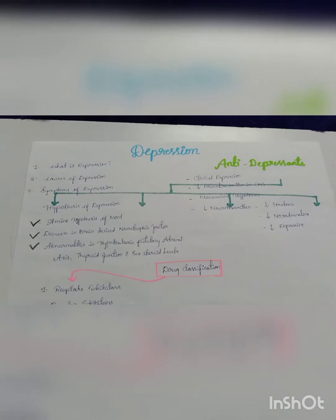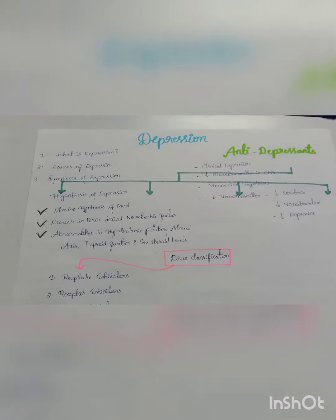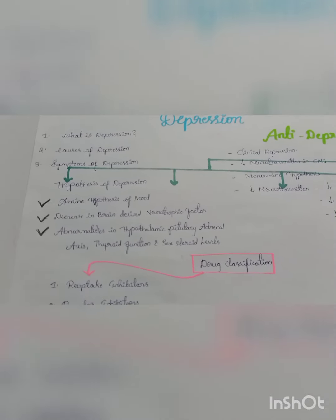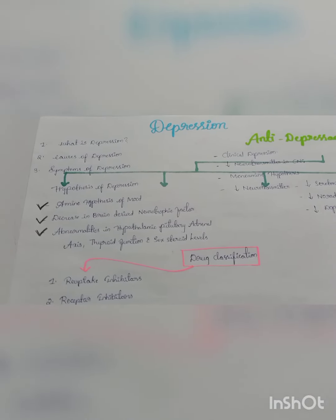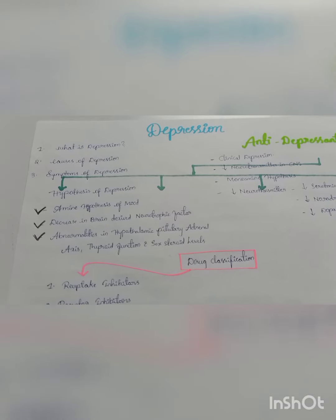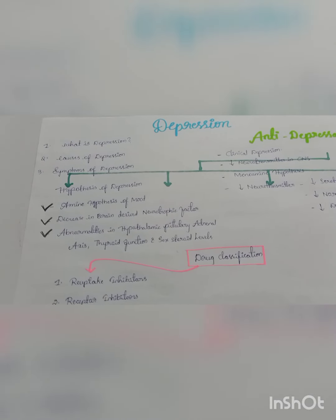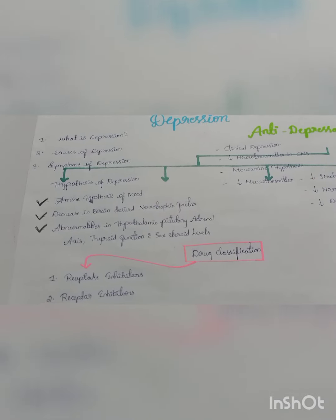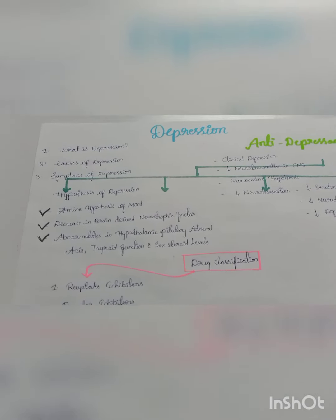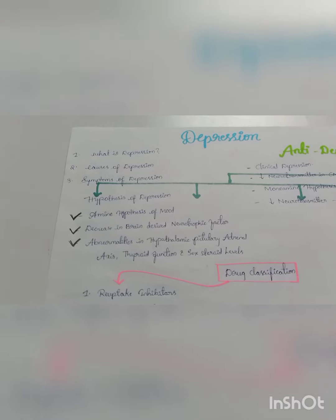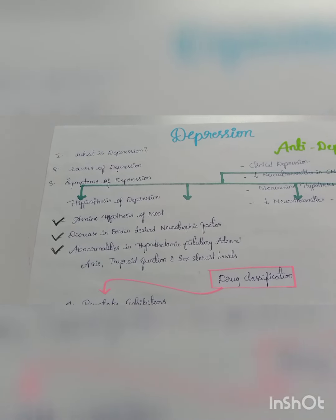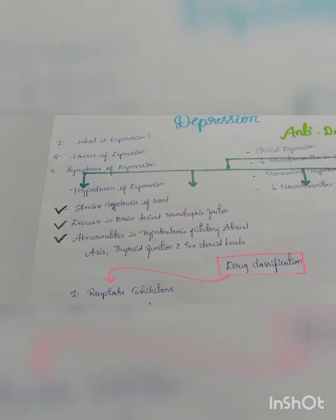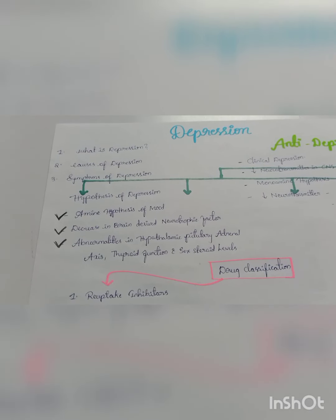Starting with depression — what is depression? The definition of depression: it is a mental health disorder which is characterized by persistently depressed mood, loss of interest in activities, and causing significant impairment in daily life. It is a feeling of sadness. What are the causes of depression? If there is a family history or illness and health issues.